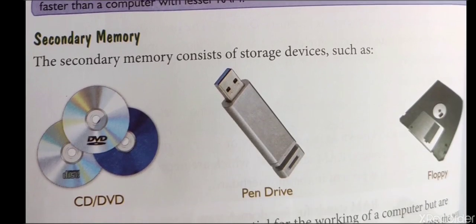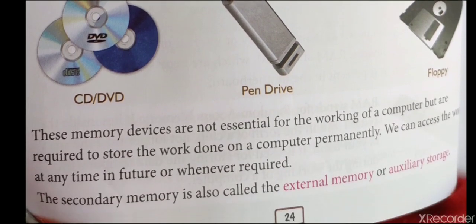Secondary memory consists of storage devices such as CD or DVD, pen drive, or floppy. These devices are not essential for the working of a computer, but are required to store work permanently. We can access the work at any time in the future. Secondary memory is also called external memory or auxiliary storage.